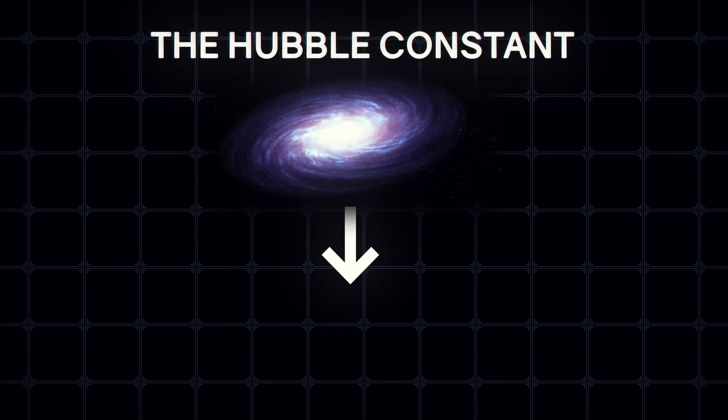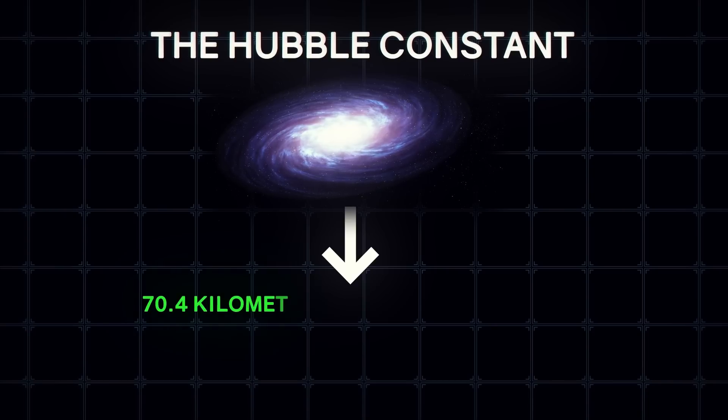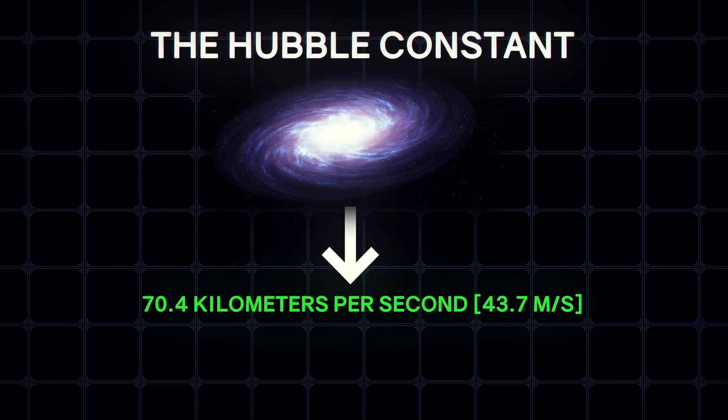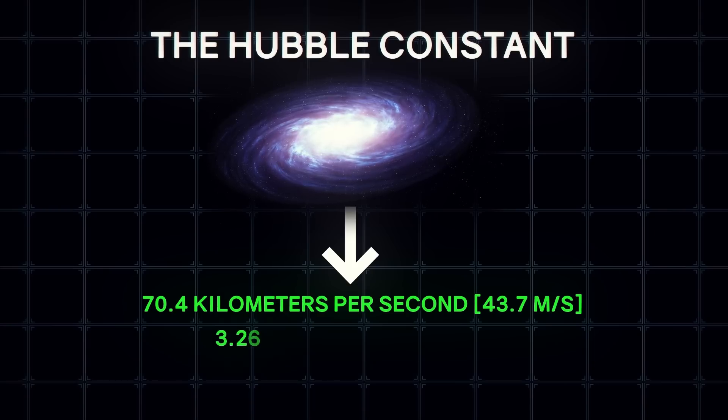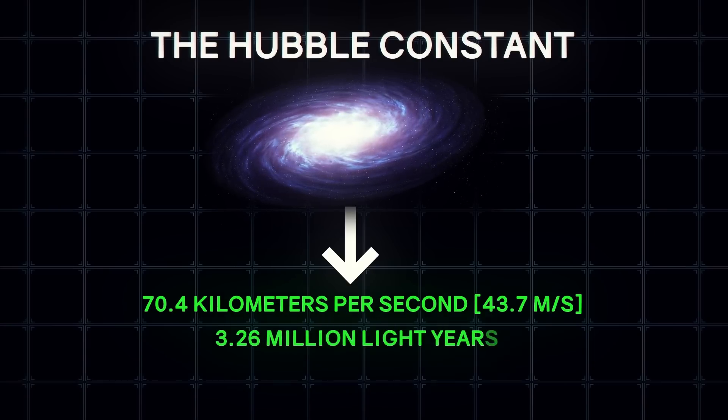According to Edwin Hubble's calculation, called the Hubble Constant, galaxies recede away from each other at the speed of 70.4 kilometers per second per megaparsec, or 3.26 million light years.